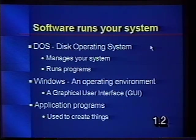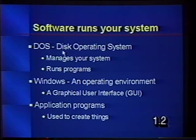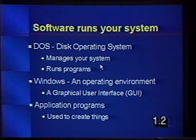You need software to be able to run your system. The three types of software required are, first of all, DOS — an acronym for Disk Operating System. It actually runs your system, manages your system resources, and runs your programs. DOS also provides utilitarian or housekeeping-type programs that let you manage the files you keep on your computer.